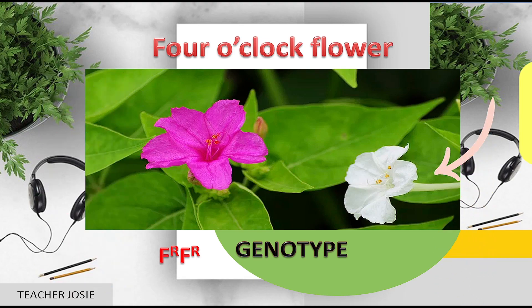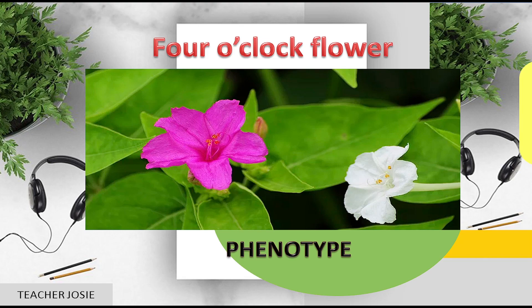How about the other one? The genotype is FWFW — the genetic makeup of the organism. What about the phenotype? The first flower has a red phenotype because it is the color and its appearance, while the other one is white. Phenotype is the physical feature or trait of an organism.